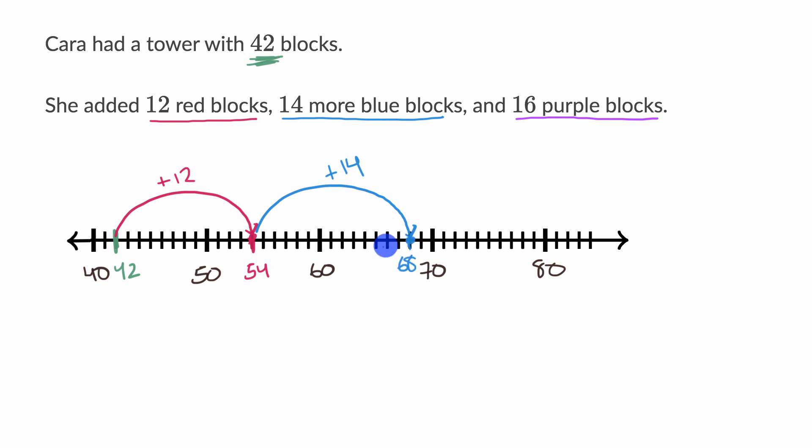So we're now at 68 total blocks, and then we add the 16 purple blocks. So let's do that. Let's add one, two, three, four, five, six, seven, eight, nine, ten, eleven, twelve, thirteen, fourteen, fifteen, sixteen. And we get right over there. We're very lucky that our number line just happened to have the right number of marks. So then we add 16, and we can see that we are one, two, three, four past 80. So we're at 84 total blocks.